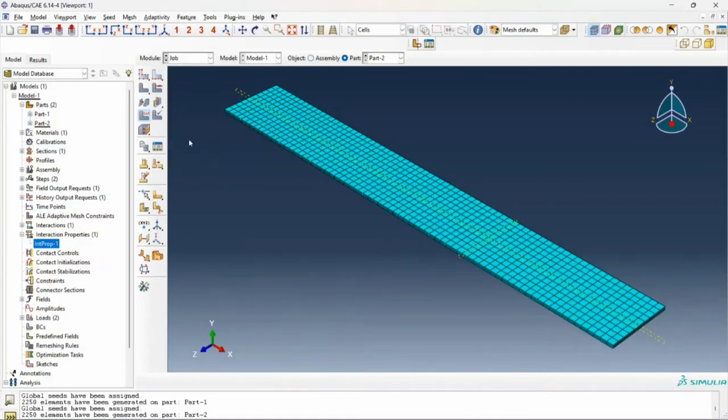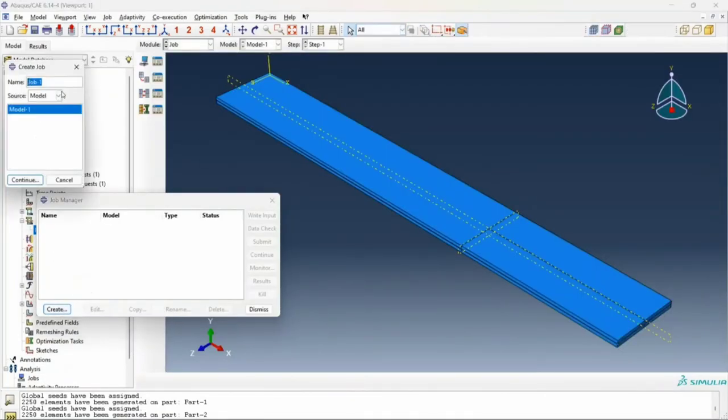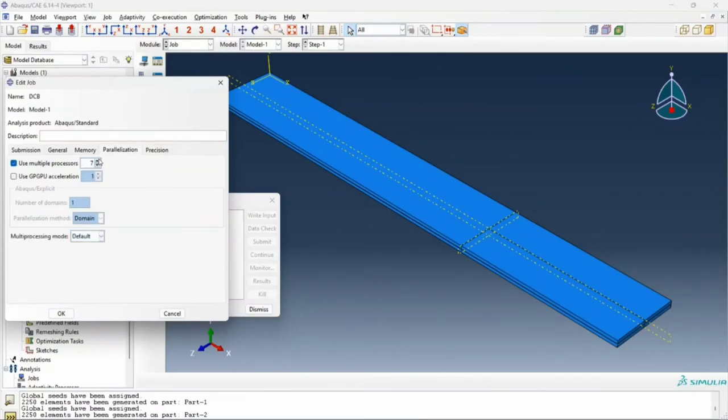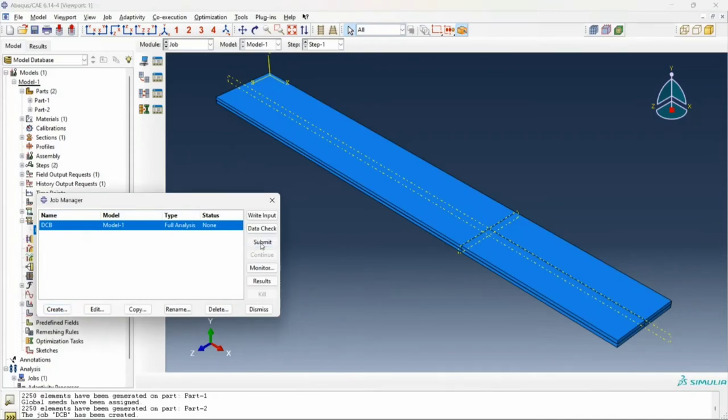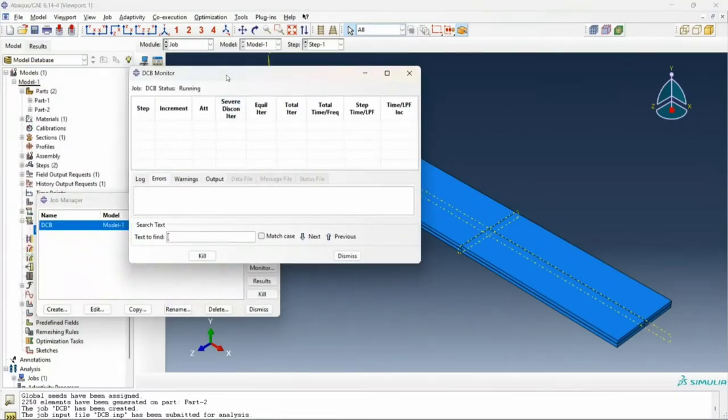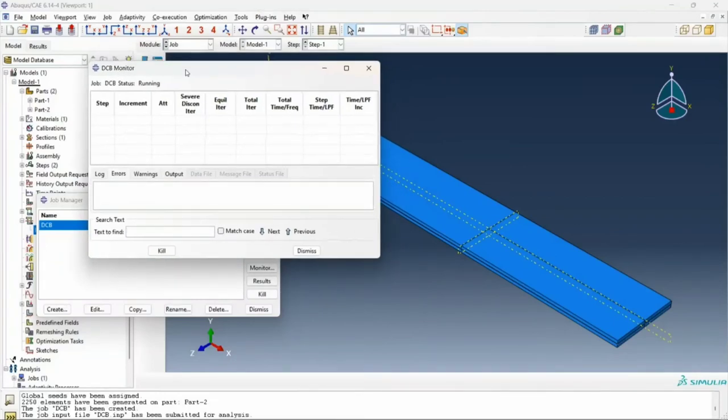That's all the modeling we needed to do. All I need to do now is submit my job. I'll call this DCB and continue. Assign it all the processes that I can, click on submit. Our analysis should ideally not take too much time since there aren't too many elements or nodes, and the analysis is also pretty simple. Since we haven't defined a maximum time step, we should also get our results in not too much time. We open the monitor here.